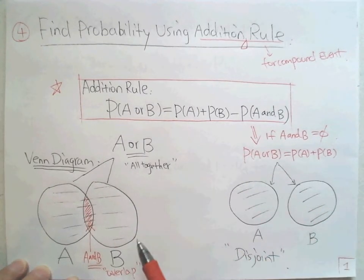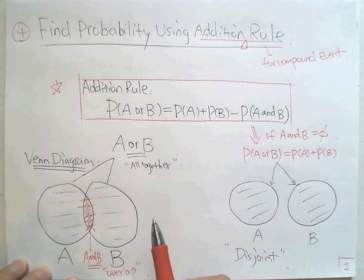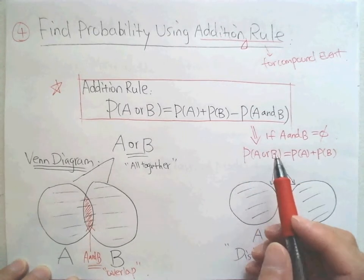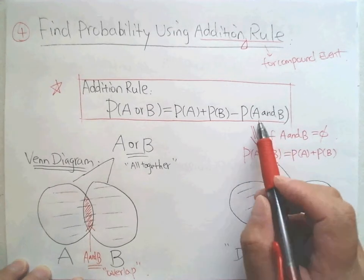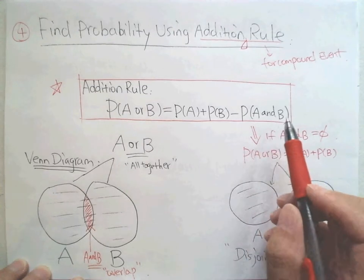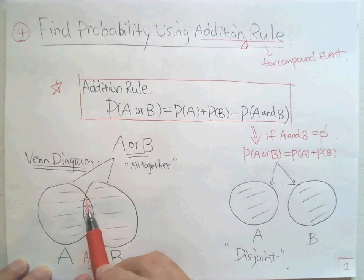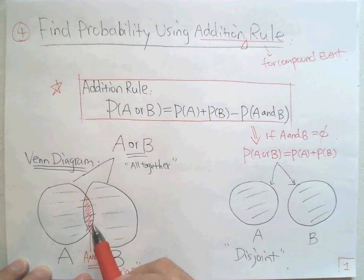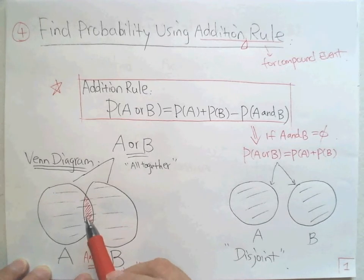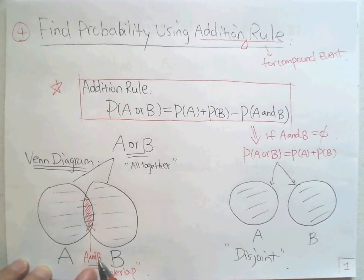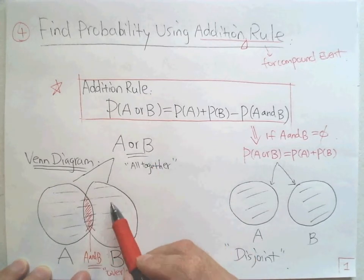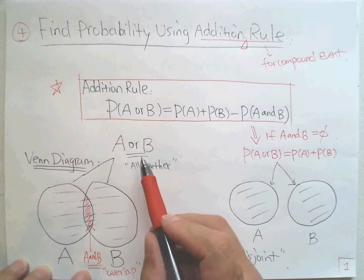So what is A and B? 'And' means A and B happen at the same time. Where is A and B? A and B is just the overlap — if an outcome is in the overlap, it means A happens and B happens at the same time. 'Or' means either A happens or B happens is okay. That is the English meaning for 'or'.